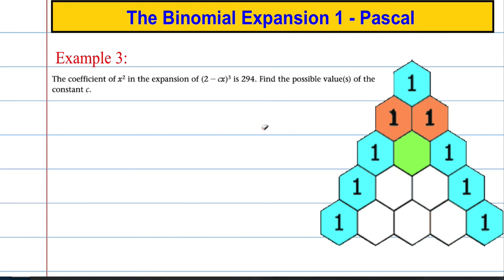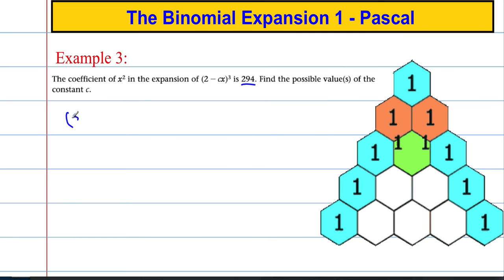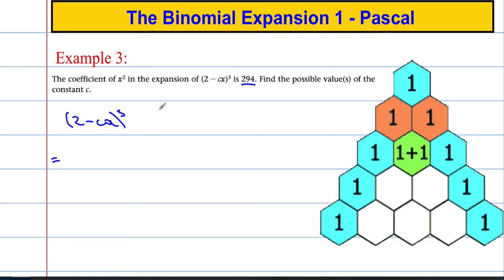One more example. It says that the coefficient of x squared in the expansion of 2 minus cx, all cubed, is 294. Find the possible values of the constant c. Well, let's see what 2 minus cx cubed looks like if we use our binomial expansion. Pascal's triangle, power of three, that means we're going to the fourth line — one, two, three, four — we're going to use this.